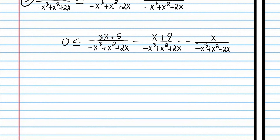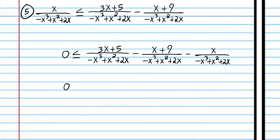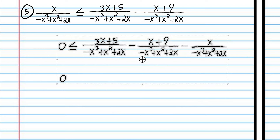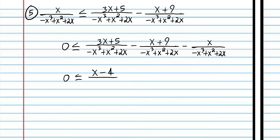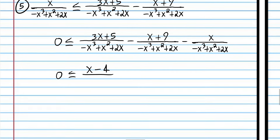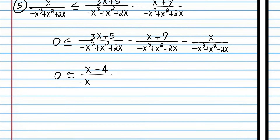That was step number one. So now we're going to combine everything into one fraction. 3x minus x is 2x, and 2x minus x is x. 5 minus 9 is negative 4. A lot of students are going to have trouble with the signs, because these are both positive numbers, but when you subtract they become negative numbers. If you don't recognize that, you're going to have a lot of trouble with these problems.